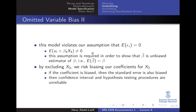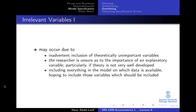This means that the estimators beta-hat will not be unbiased — the expected value of beta-hat will not equal the true parameter. By excluding x3, the coefficient for x2 (beta_2) will be biased, the standard error will also be biased, and this will affect the confidence interval and hypothesis testing, which we cannot trust.